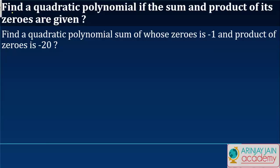In this video we are going to look at how to find a quadratic polynomial if the sum and product of its zeros are given. Find a quadratic polynomial, sum of whose zeros is minus 1 and the product of the zeros is minus 20.